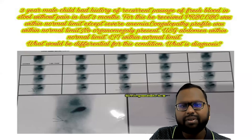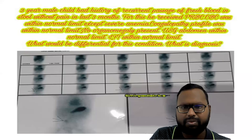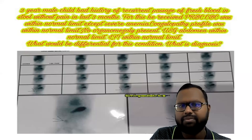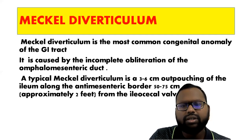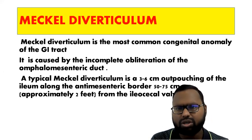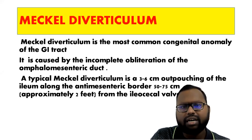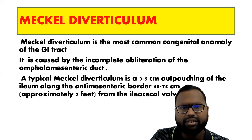In Meckel's Diverticulum, you will get CBC profile within normal limits and coagulopathy profile within normal limits. So, let's discuss Meckel's Diverticulum. Meckel's Diverticulum is the most common congenital anomaly of the GI tract. It is caused by incomplete obliteration of the omphalomesenteric duct.